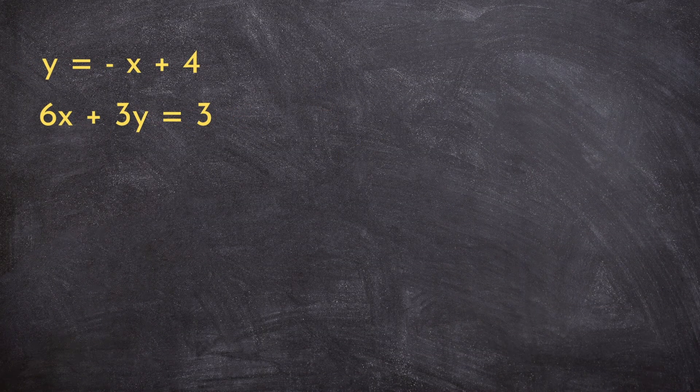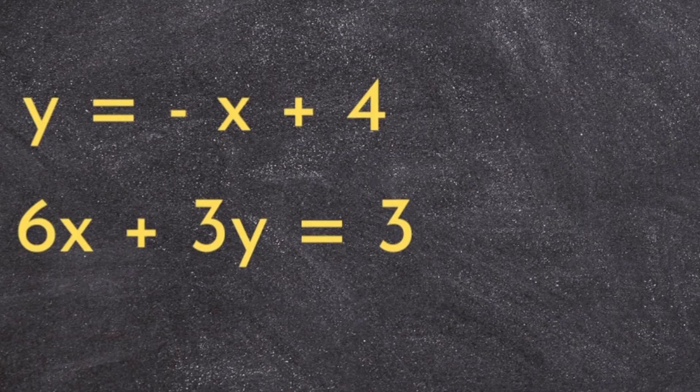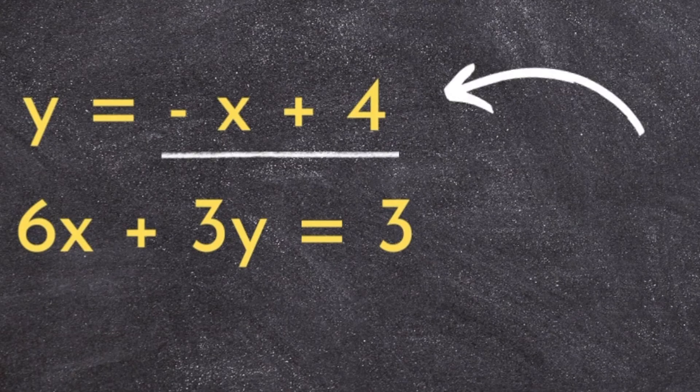Here's how it works. Take a look at your linear system and find a line that already has y or x by itself. Like this one.